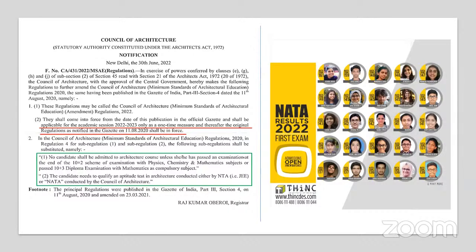But as per the latest notification published on 30th June, they have made an amendment to the criteria. As per the official notification, no candidate shall be admitted to an architecture course unless they have passed an examination at the end of the 10+2 scheme with Physics, Chemistry, and Mathematics subjects, or passed a 10+3 diploma examination with Mathematics as a compulsory subject. They have clearly removed the 50% criteria from the eligibility criteria.